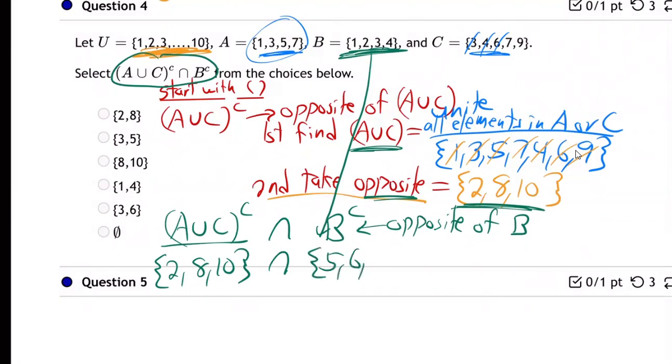The opposite is five, six, seven, eight, nine, ten, right? That's the opposite of B. Because the universe is one through ten. So if B is one through four, the opposite is five through ten.